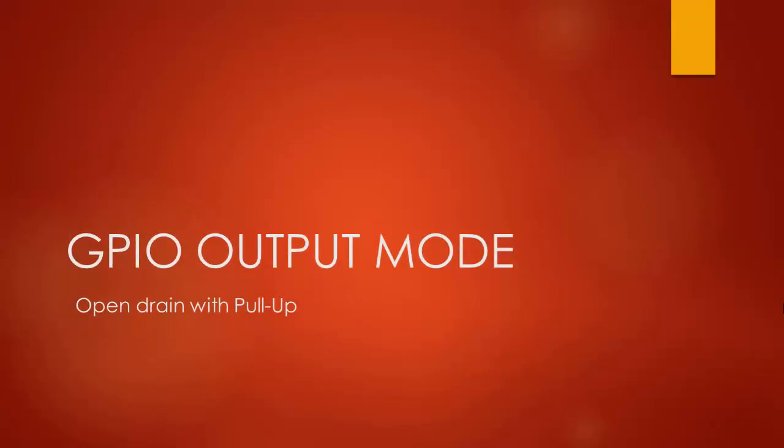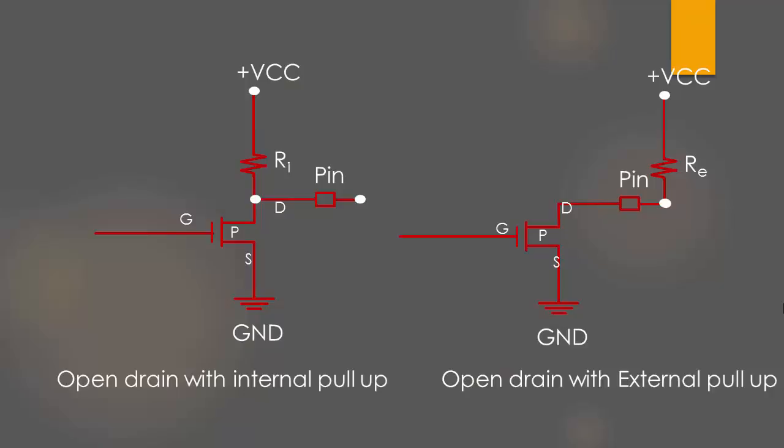Here you can see it's actually an open drain pin with internal pull-up activated. Similarly, this figure shows an open drain output with external pull-up connected. So what I want to convey from this discussion is that to make use of open drain in a real world application, it has to be used along with either internal pull-up or external pull-up resistor.